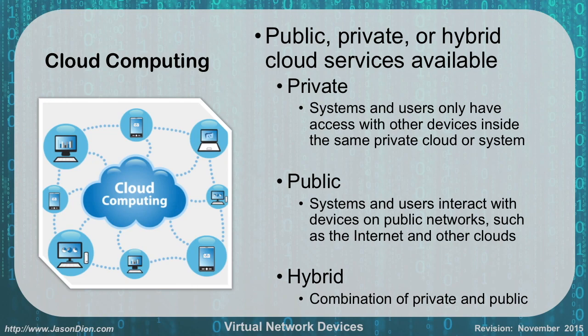Probably the best example of a hybrid cloud is Google. They have the ability to give you a hybrid cloud for your business — if you buy a domain name, they can provide web hosting, software applications, email, and more in the cloud for your business. It's a public cloud service that's being privately held for you, making it a hybrid. With private clouds, the key distinction is that you own all the systems, hardware, and infrastructure. Some big colleges have private clouds spread across multiple campuses.